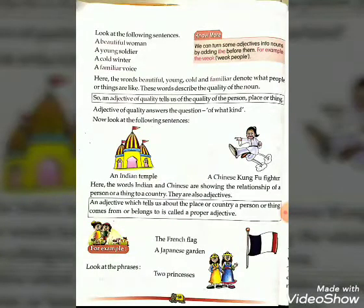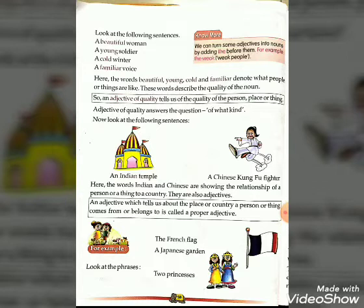Look at the following sentences: 'a beautiful woman,' 'a young soldier,' 'a cold winter,' 'a familiar voice.' Here the words beautiful, young, cold, and familiar denote what people or things are like.